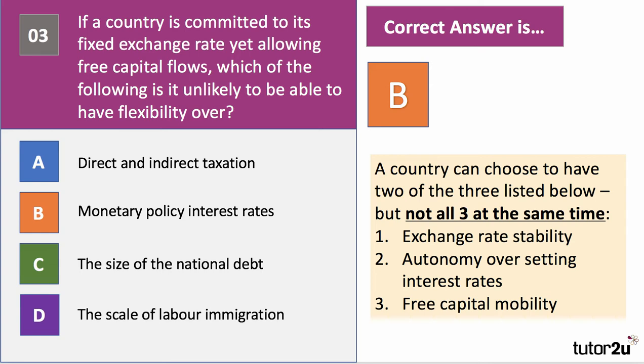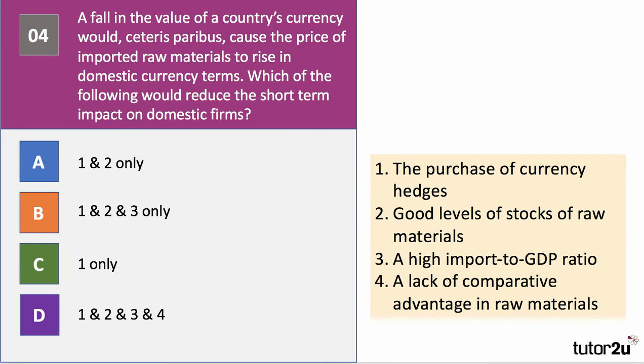Question four: a fall in the value of a country's currency would, ceteris paribus, cause the price of imported raw materials to go up in domestic currency terms. Which of the following — one, two, three, or four — would reduce the short-term impact on domestic firms in terms of the inflationary cost of raw materials? I'll give you a clue: one is correct. Press the pause button and have a go.